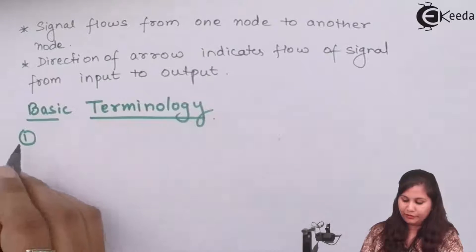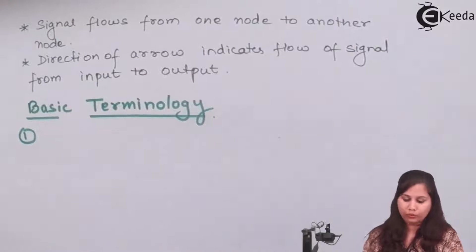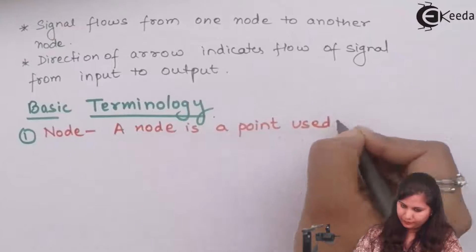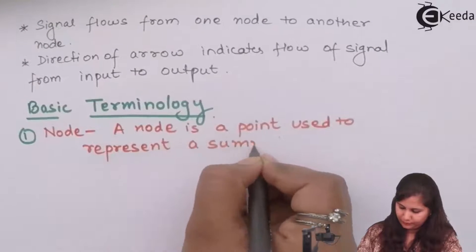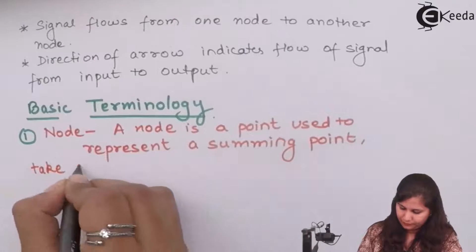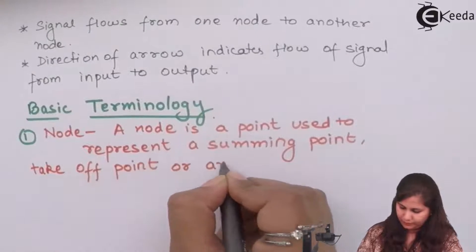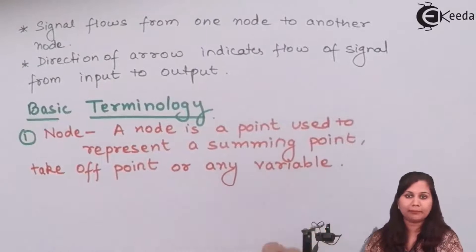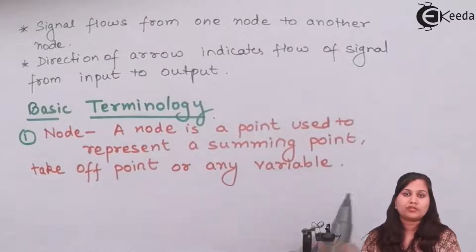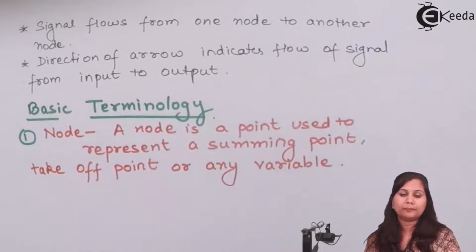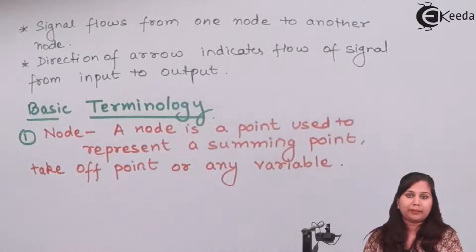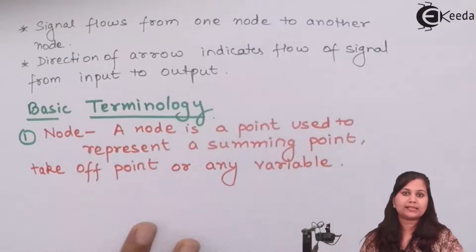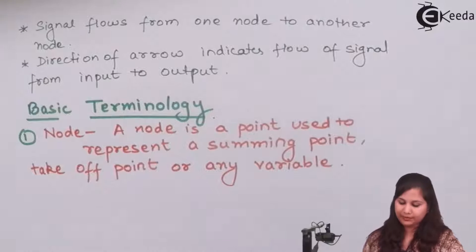The first term introduced in the signal flow graph is the node. A node in the signal flow graph is a point which is used to represent either a summing point, a takeoff point, or any variable. So when we are converting a block diagram into a signal flow graph, we can replace the summing points, the takeoff points, and any of the variables by the node.